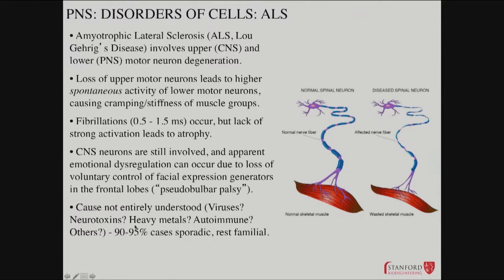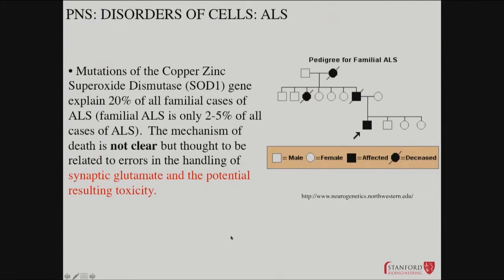The causes of ALS are not fully understood. It's mostly a spontaneous disease that can happen to anybody. Is it a virus, a toxin, an exposure to heavy metal, autoimmune? We don't know — it's mostly sporadic. There are familial cases though, and they've given us some insight. Twenty percent of all familial cases, which are a tiny fraction of the overall, are due to deficiencies in the superoxide dismutase gene.